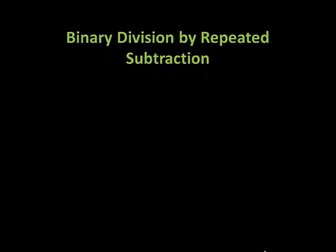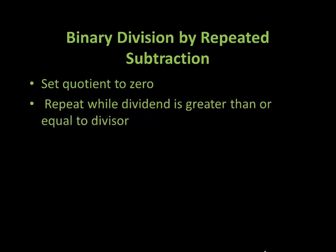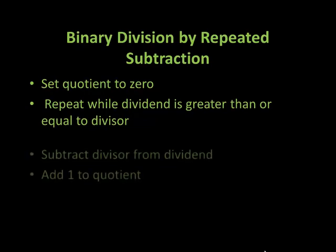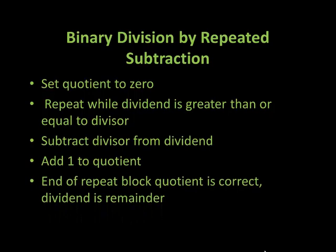Binary division by repeated subtraction: set the quotient to zero. We will repeat while the dividend is greater than or equal to the divisor. The two operations are: subtract the divisor from the dividend, and add one to the quotient. At the end of the repeat block, the quotient is correct and the dividend is the remainder.